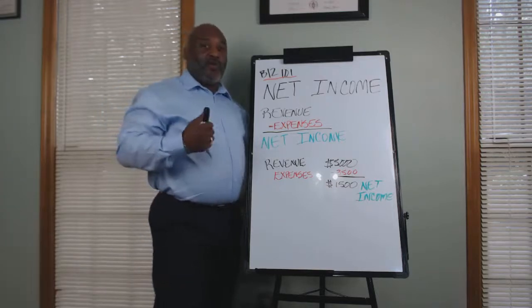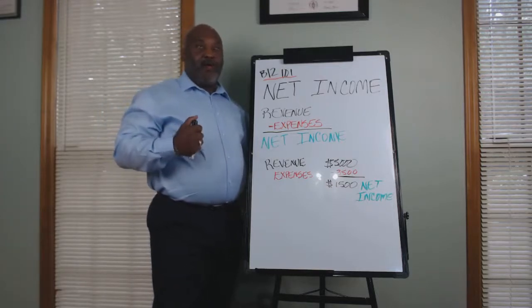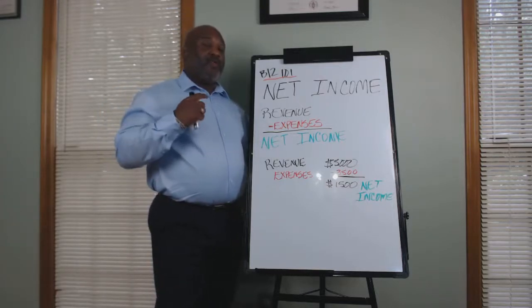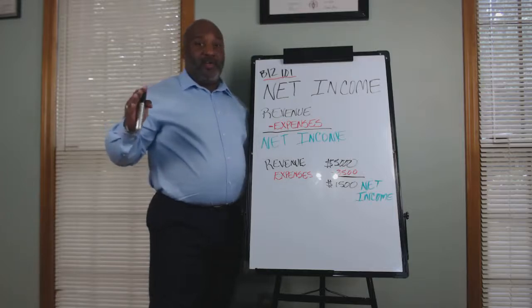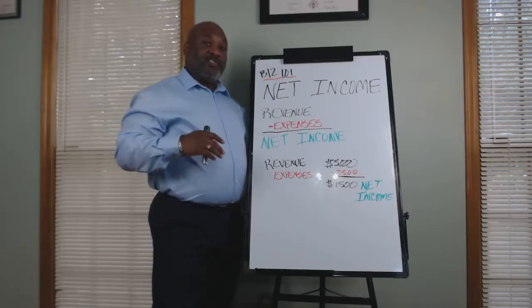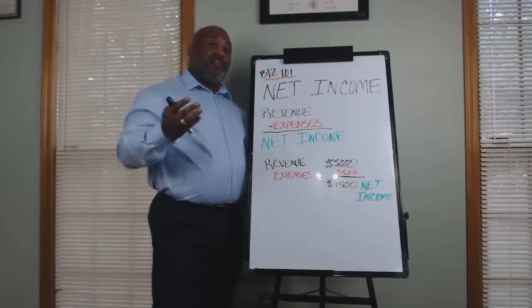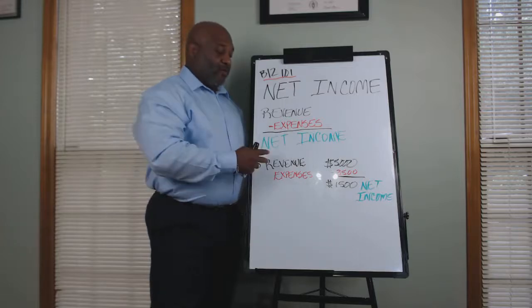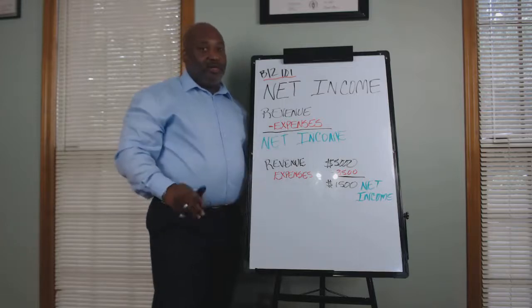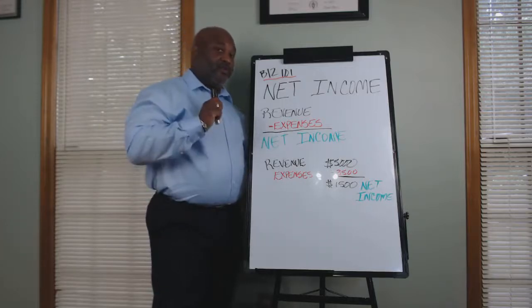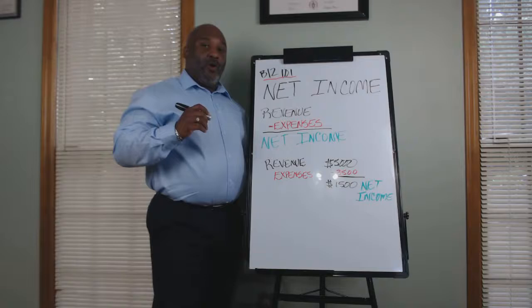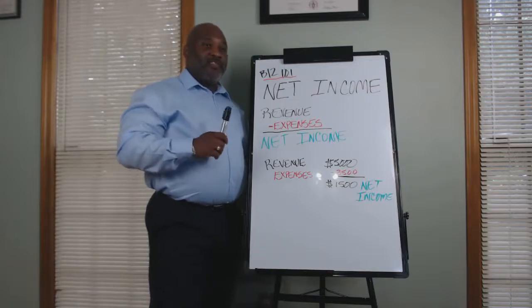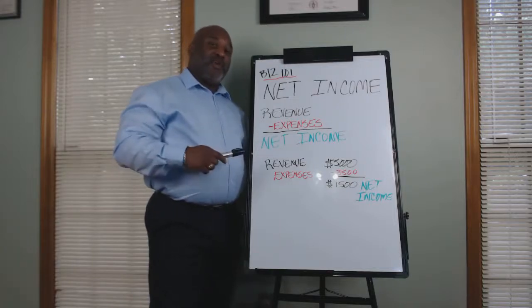When we look at net income or profit, it can cover a particular point in time or a period. You're just looking at the money that you're pulling in minus the money you're pulling out and what's left over. That can be for a certain point in time or it can be over a period. That's one of the biggest differences when we look at the balance sheet.